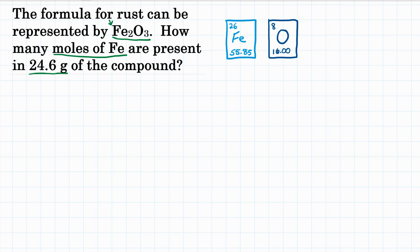Starting with what the problem gives us, we have 24.6 grams and that is of Fe2O3, that's of rust. We want moles of iron, so we're going to put over here equals moles of just Fe, just iron.